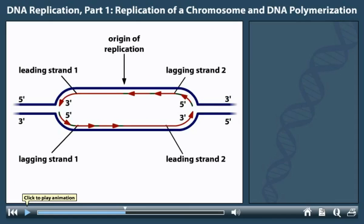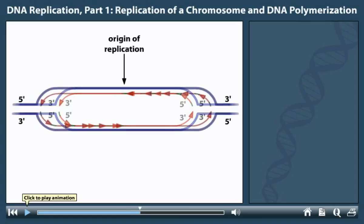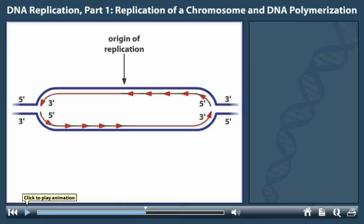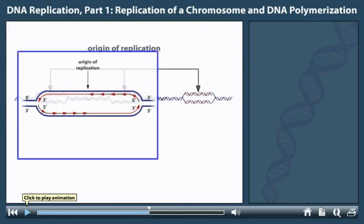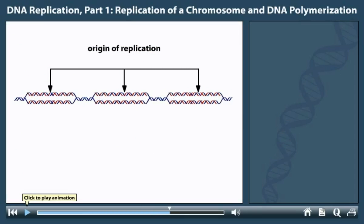At each origin of replication, DNA synthesis proceeds bidirectionally. Two replication forks move outward in opposite directions. The replicating DNA helices from each origin elongate and eventually join each other.